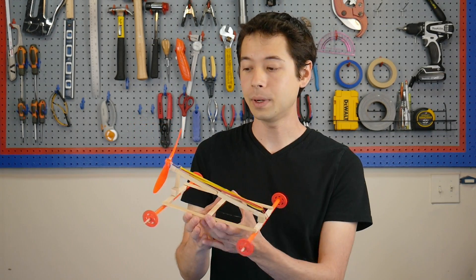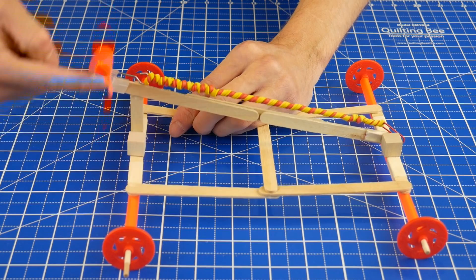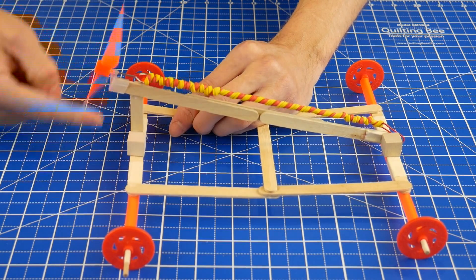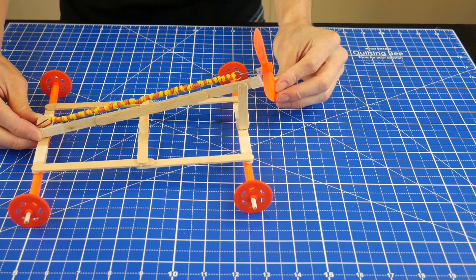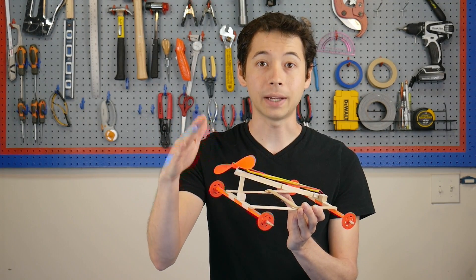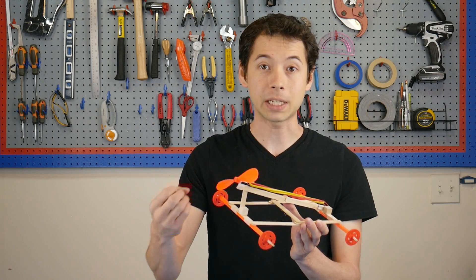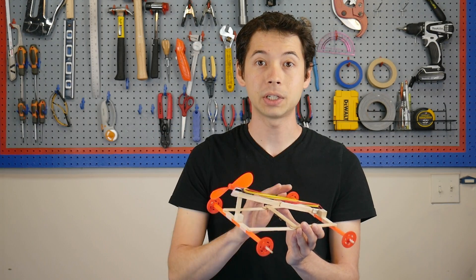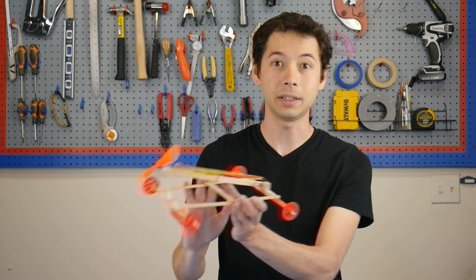Because obviously, when you turn the propeller, you are winding up these rubber bands, which is storing lots of potential energy, and then that is converted into kinetic energy in the form of the spinning propeller. So, because the propeller blades are angled, it is generating thrust by pushing air this way, which causes the car to propel the other way.